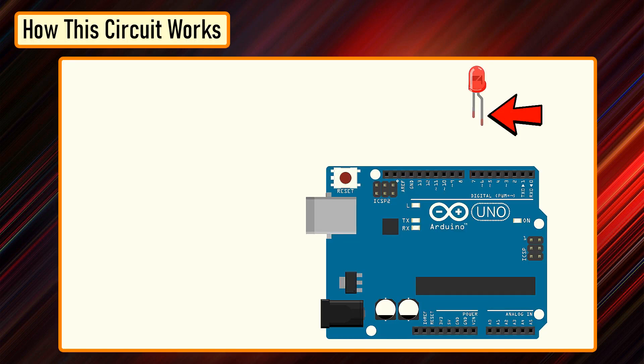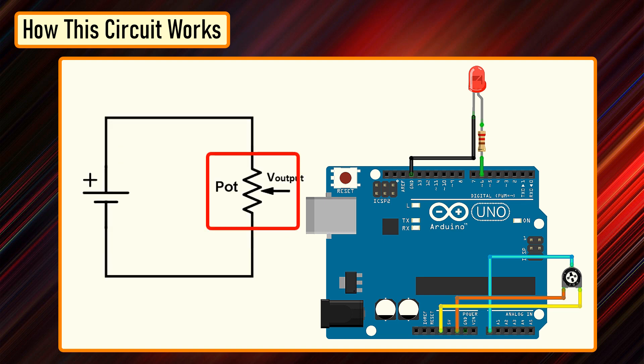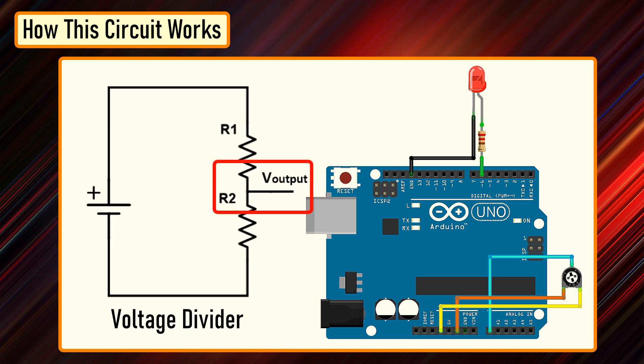Connect the positive leg of your LED to the digital output pin number 6 of the Arduino through a 220 ohm resistor. Connect the negative leg directly to the ground. Connect the left pin of the 10K pot to VCC and the right one to the ground. Now connect the data pin to the A0 pin of Arduino. In this circuit, the potentiometer is working as a voltage divider. One of the outer pins is connected to ground and the other one to VCC, and the middle pin is the voltage output. The wiper position in this setup determines the output voltage.